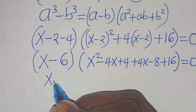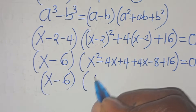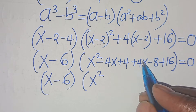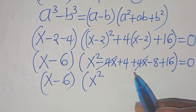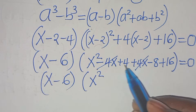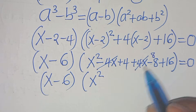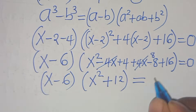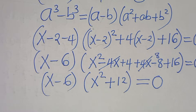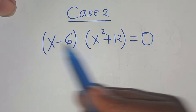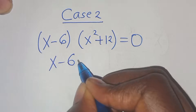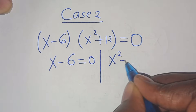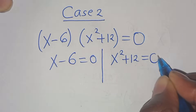So we have x minus 6, and in the bracket: x squared, minus 4x plus 4x which simplifies, then minus 8 plus 16 is 8, then 4 plus 8 is plus 12. This equals 0. Now we have two parts: x minus 6 equals 0, and x squared plus 12 equals 0.